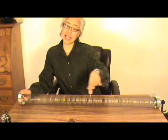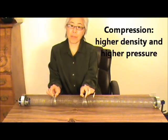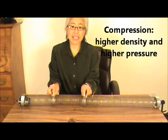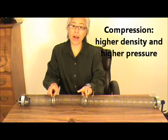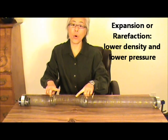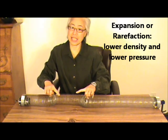Let's pretend that this slinky is a column of air and this is a drum membrane. When I hit the drum, the membrane vibrates which causes the air to vibrate. We get compression, the higher density and high pressure air in this part, while having expansion or rarefaction with low density and low pressure air in this part.